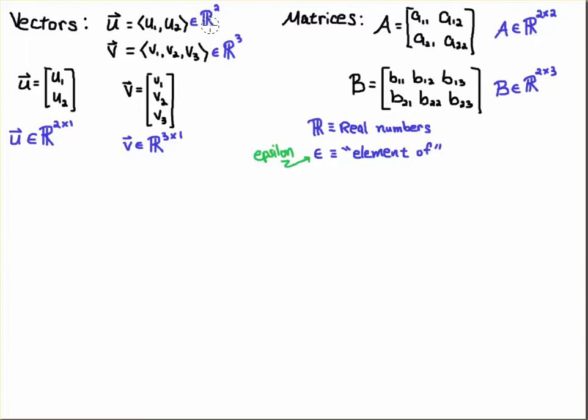Now for some notation, this double-barred R—those are the real numbers. And this symbol that looks like an E or C with a line through it, that's an epsilon, Greek letter epsilon, and that means 'element of' or 'inside of.' So this vector u is inside of R^2. You could think of that like an ordered pair. This would be in R^3, and that would be an ordered triple.